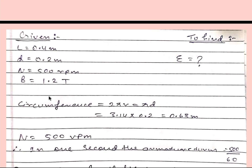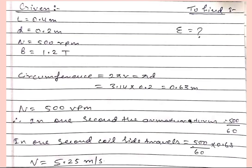Again we will write what is given and what we have to find. Given is length of the conductor L equals 0.4 meter, diameter is 0.2 meter, N is 500 rpm, and magnetic flux density B is 1.2 tesla. We have to find EMF. So first of all circumference equals 2πr, simply we can write it as πd, then we will get circumference 0.63 meter.